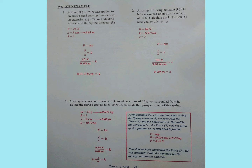Moving down to question 3. It says that a spring receives an extension of 8 centimeters when a mass of 35 grams was suspended from it. Taking the earth's gravity to be 10 Newtons per kilogram, calculate the spring constant of the spring. We list all the values: M is 35 grams, converted it becomes 0.035 kilograms. K is the unknown, so we put a question mark beside it.